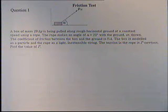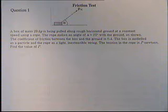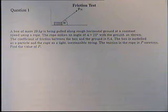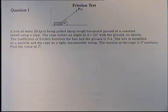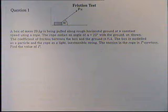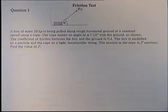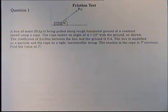We've got a box of mass 29 kilograms and it's being pulled along a rough horizontal ground at a constant speed. If there's constant speed, that means we should immediately know there's no acceleration, which is useful for later. The rope makes an angle of 23 degrees with the ground and the coefficient of friction between the box and the ground is 0.4.